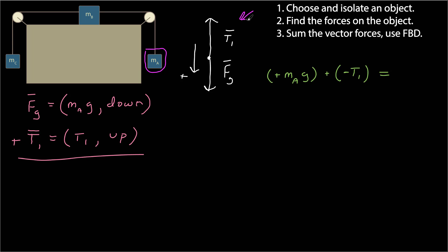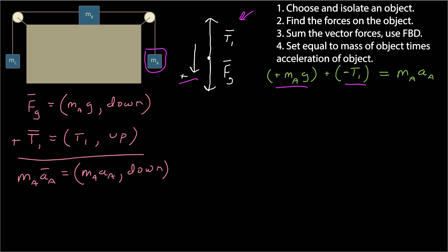Summing forces using a free body diagram, I represent mass a with a dot, with tension 1 up and gravity down. I choose positive to be down, because I expect mass a to accelerate downward since it's heavier than mass c. In my one-dimensional vector notation, the sign indicates direction: positive gravity plus negative tension 1. Setting this equal to mass a times acceleration a, I have a positive force due to gravity minus tension 1 equals mass a times acceleration a.